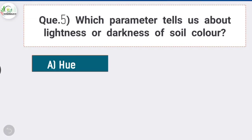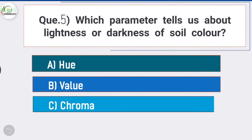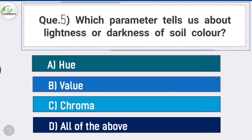Question number five: which parameter tells us about lightness or darkness of soil color? Answer is option B, value. The parameter which tells us about lightness or darkness of soil color is value. Hue depicts dominant spectral color, and chroma depicts purity of dominant color.